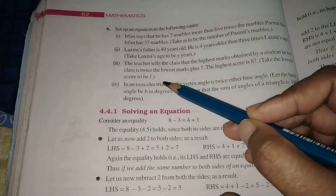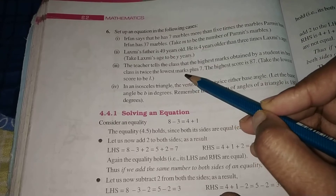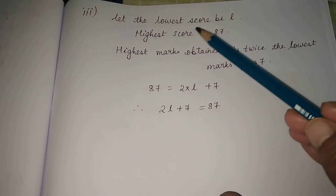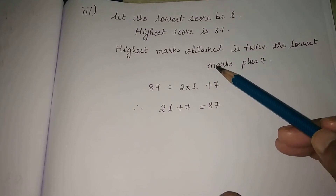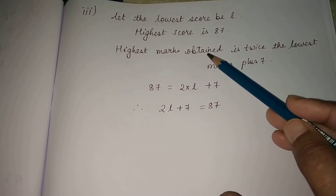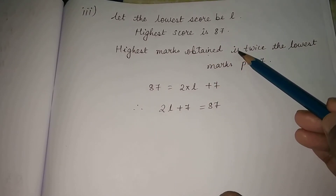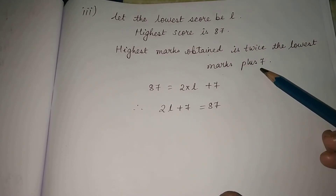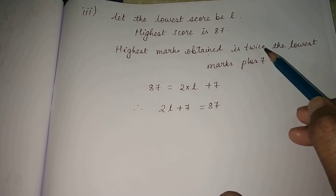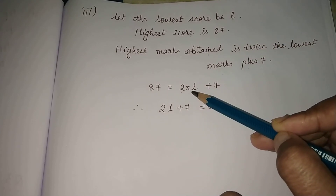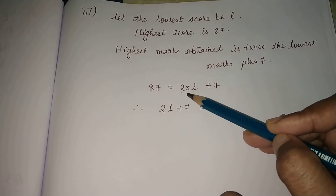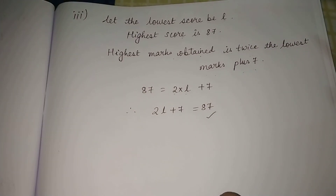Number 3: The teacher tells the class that the highest marks obtained by a student is twice the lowest marks plus 7. The highest score is 87. Let the lowest score be l. Twice the lowest marks = 2l, and twice the lowest marks plus 7 = 2l + 7. So the equation is 2l + 7 = 87.